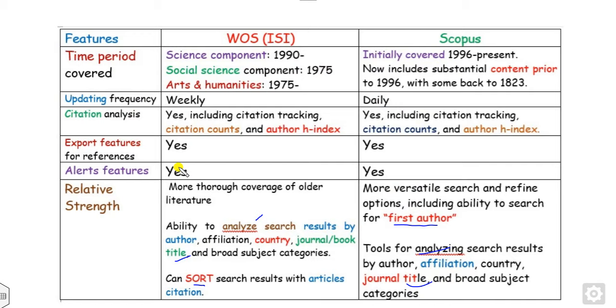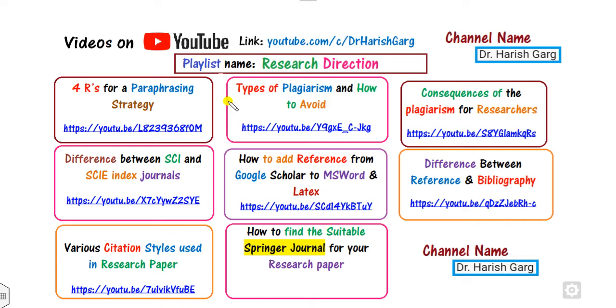I hope you learned the basic difference between them. If you want to learn more research findings like the difference between SCI and SCIE, difference between reference and bibliography, what is plagiarism, how to find suitable journals, you can browse this channel and the link is here.